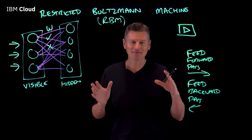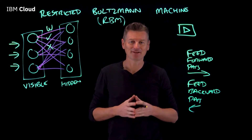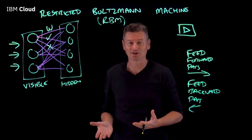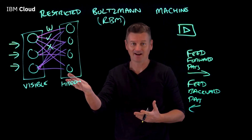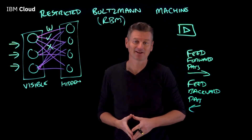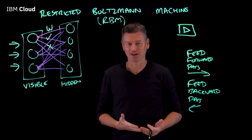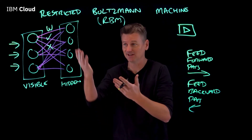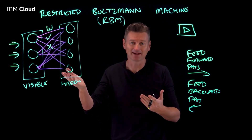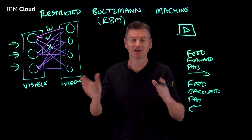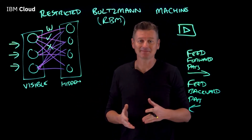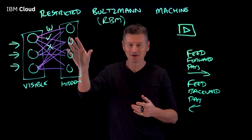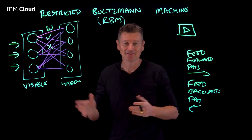In our video recommendation example, our visible layer could consist of videos that a person has watched. Our hidden layer could consist of a classification for each video — such as what the video is about: machine learning, Python programming, or cats. Or the hidden layer could represent the style of video, like a demo video, a vlog, or a talking-head video.